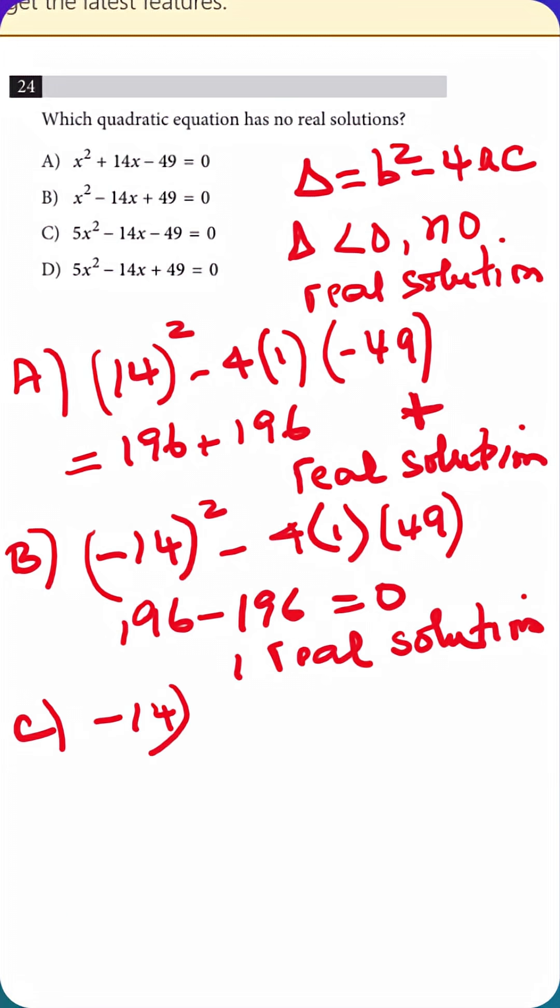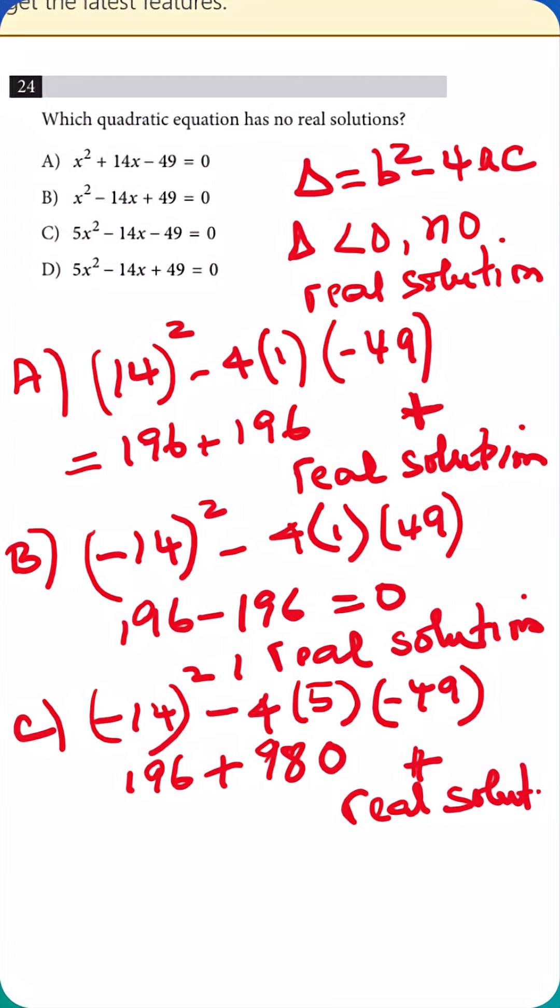Option c, negative 14 squared minus 4 times 5 times negative 49, that equals 196 plus 980 positive, so it has real solutions.